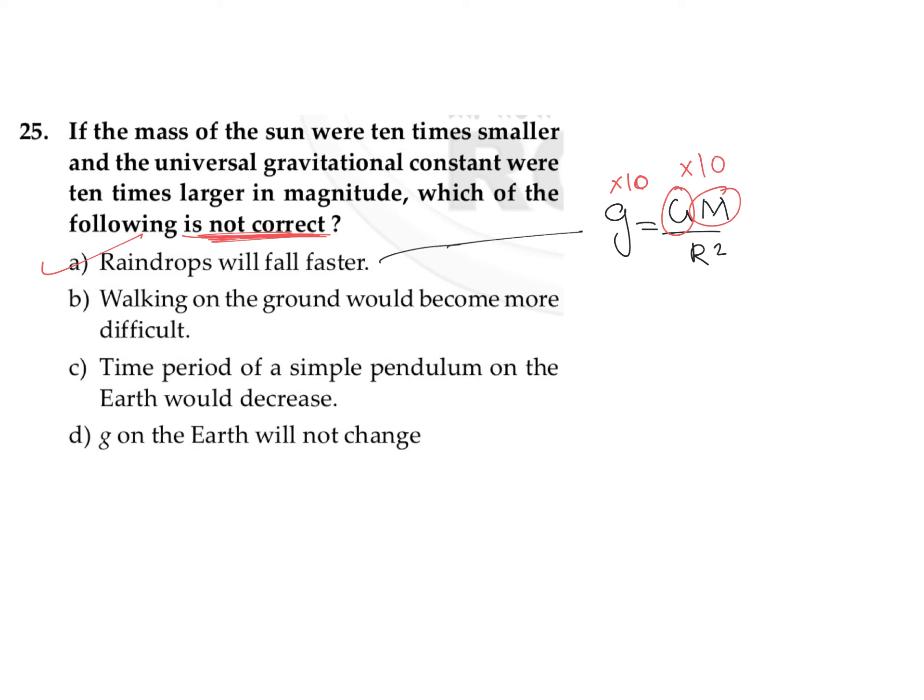Next one: walking on the ground would become more difficult. As the value of mg increases, as the value of weight of a person increases or as the value of weight increases, it may be difficult for a person to walk on the ground. So second option is also correct.